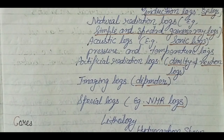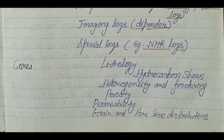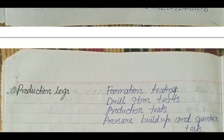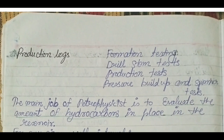From cores we already discussed what we get: lithology, hydrocarbon source, heterogeneity, fracturing, porosity, permeability, grain and pore size distribution. Now there is a term called production log, and it requires a separate video because it is a huge topic.